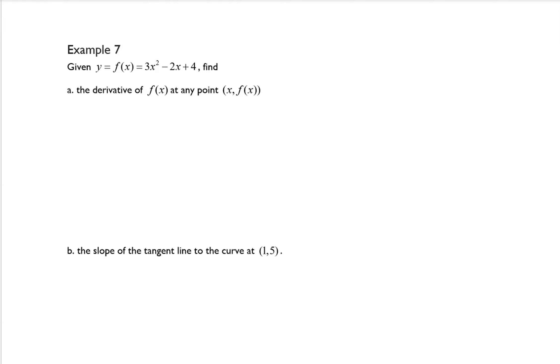Example 7 says given y equals f(x) equals 3x squared minus 2x plus 4, find the derivative of f(x) at any point (x, f(x)).